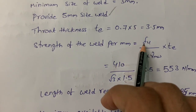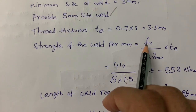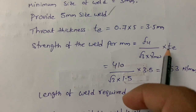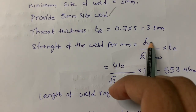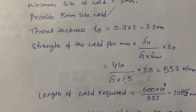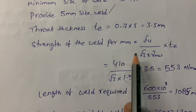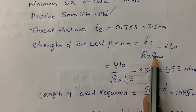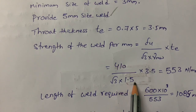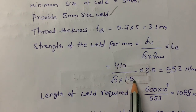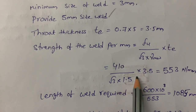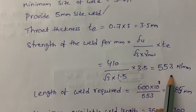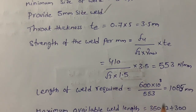Design strength of the weld = fu / (√3 × γmw) × te. The fu value is ultimate stress from table 1, page 14 of IS 800:2007. γmw is the partial safety factor from table 5, page 13 of IS 800:2007, value is 1.5. Throat thickness te is 3.5 mm. This gives 553 N/mm.